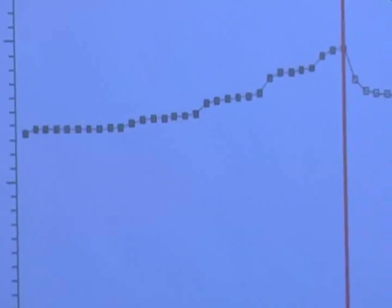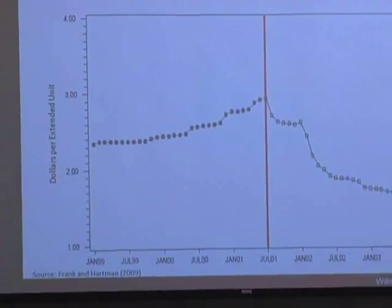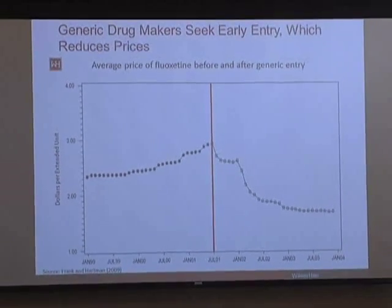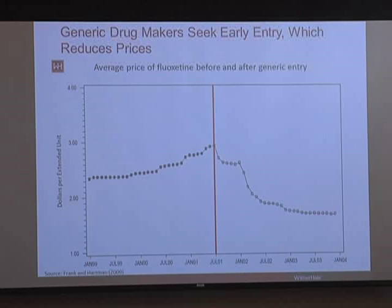Once upon a time, generics were content to wait until all the patents expired and then come into the market. Today, what very frequently happens is the generic will assert that relevant patents are either invalid or not infringed, thereby triggering patent litigation that gets resolved either through a litigation result or through a settlement. One of the first of these cases involved fluoxetine—Prozac—the famous first blockbuster to have its patent busted in 2001. Prozac helps us see that there are several different kinds of patents put at issue in these litigations: sometimes it's the compound patent, sometimes other secondary patents.